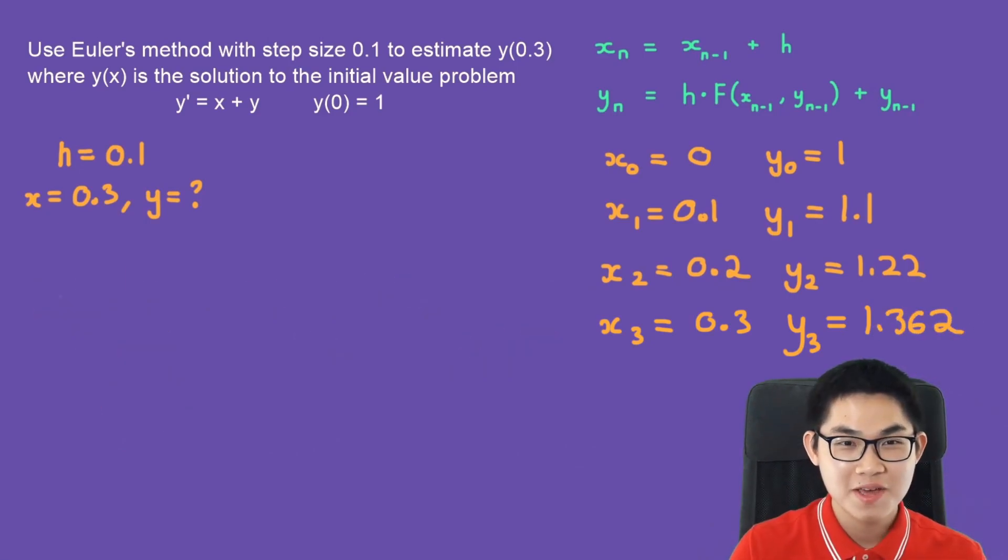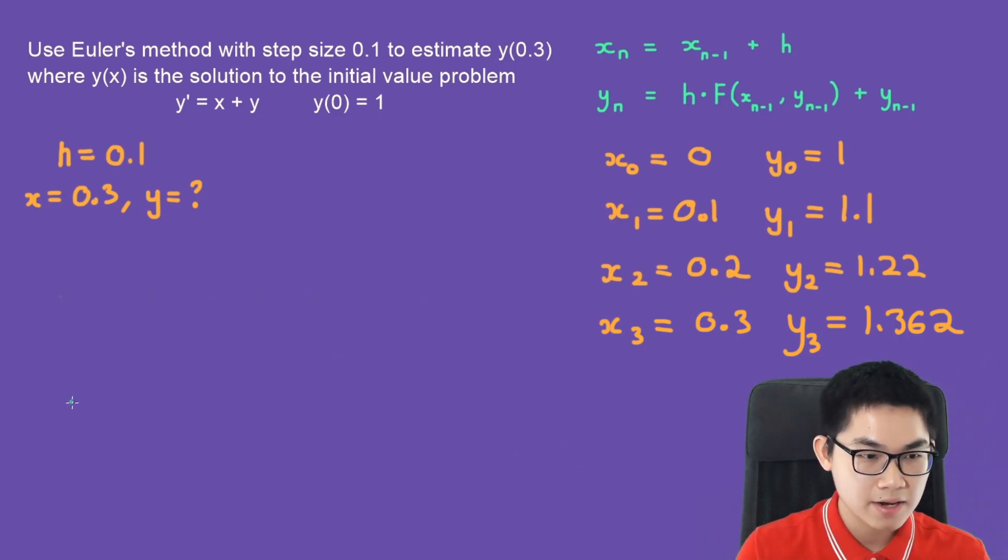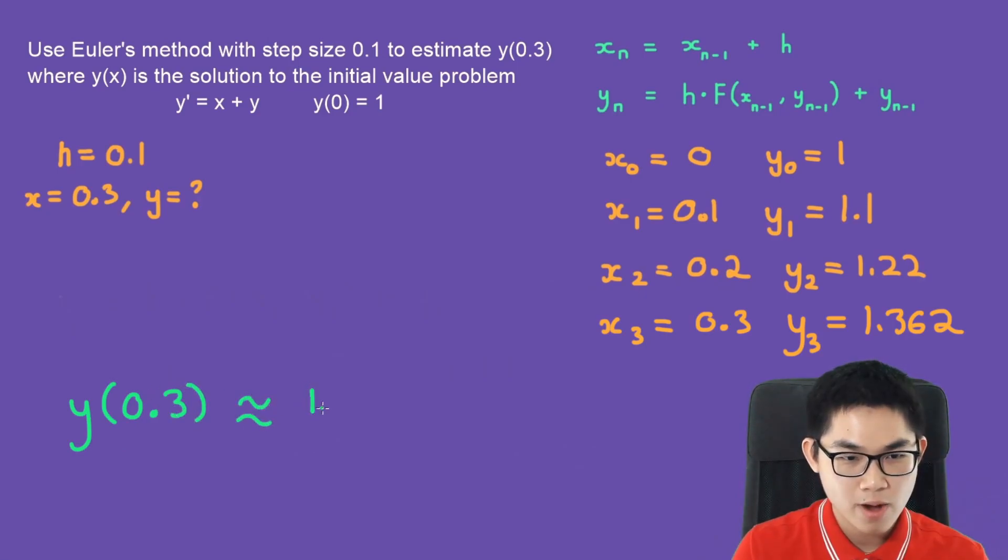We're almost finished because the problem is asking for y at 0.3. And here we have when x is equal to 0.3, then y is 1.362. And this is just the approximate to the actual value or the true value of the solution curve. So all we have to do is just say that y at 0.3 or the true value is approximately 1.362.